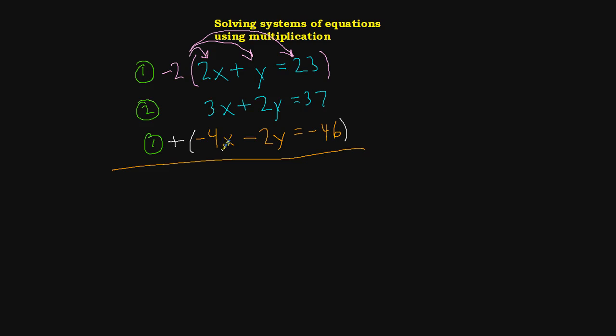So I'm going to go ahead and put a plus sign down here, and I'm going to add the 3x and the negative 4x. I'll add the 2y and the negative 2y, and I'll add the 37 and the negative 46. So when I do, I get some result.